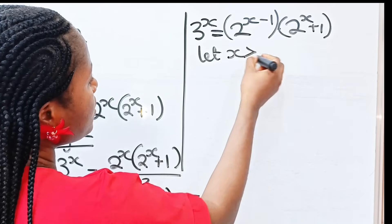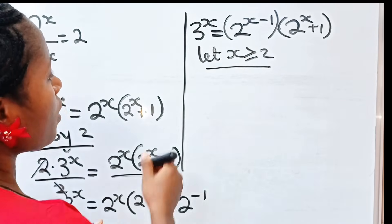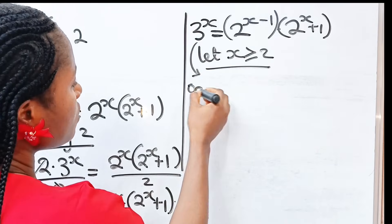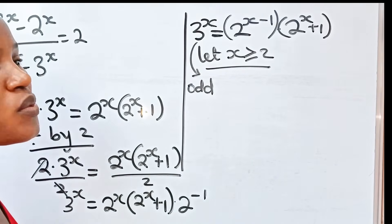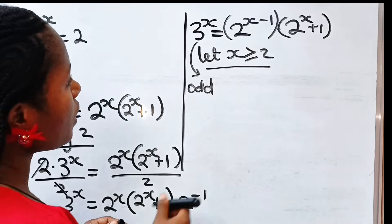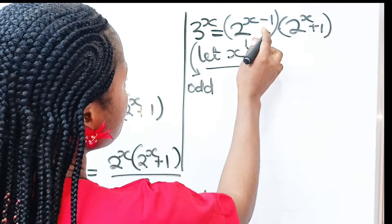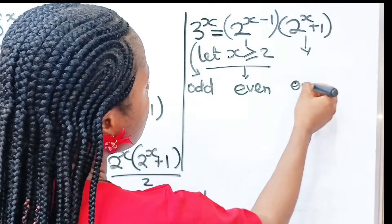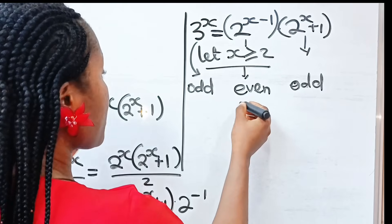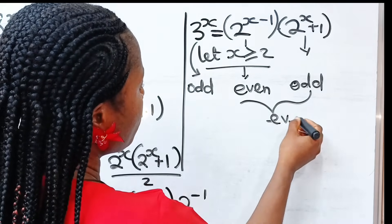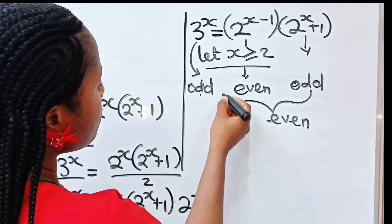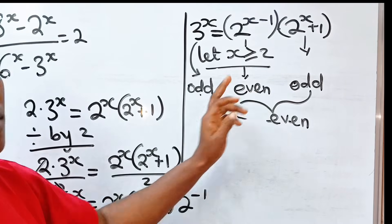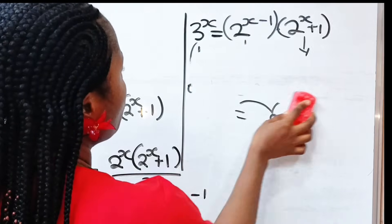Now let x be greater than or equal to 2. Notice that 3 to the power of x will always give an odd number. The term 2 to the power of x minus 1 gives even, and 2 to the power of x plus 1 gives odd. Even multiplied by odd gives even, and odd cannot be equal to even. So there will be no solution for x ≥ 2.